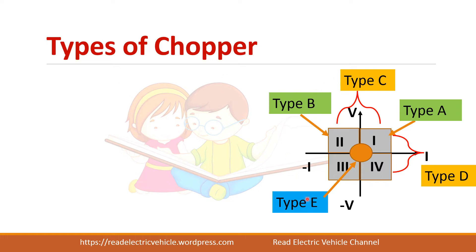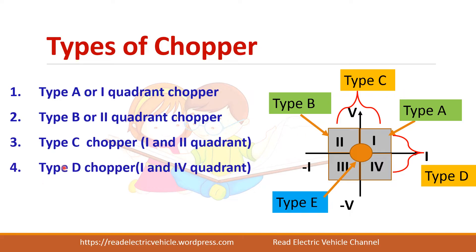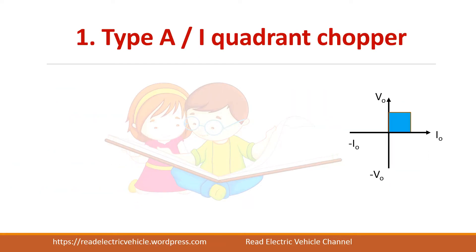There are basically five types of chopper. The first is Type A, or the first quadrant chopper, which operates in the first quadrant. Next is Type B, which operates in the second quadrant. Type C can operate in both the first and second quadrants. Type D can operate in the first and fourth quadrants, and Type E can operate in all four quadrants.